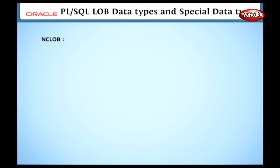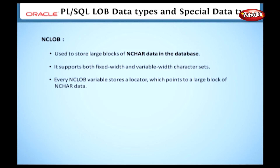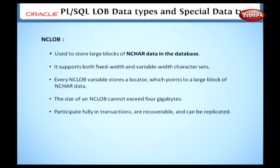And finally, we'll discuss the NCLOB type. NCLOB data type is used to store large blocks of NCHAR data in the database. It supports both fixed width and variable width character sets. Every NCLOB variable stores a locator which points to a large block of NCHAR data. The size of an NCLOB cannot exceed 4 gigabytes. NCLOB data types participate fully in transactions, they are recoverable and can be duplicated. From this discussion, you should have a general idea about LOB data types in PL/SQL. In the next section, we will see some new data types.